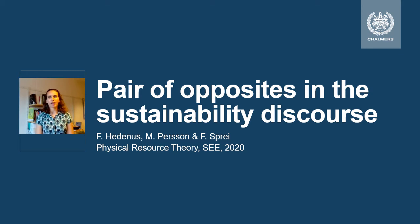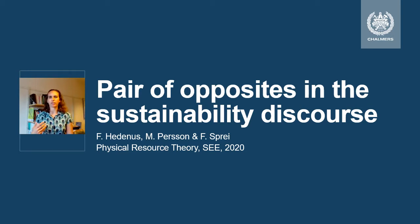Hi, my name is Frances Spry and in this short video lecture I'm going to present different pairs of opposites that can describe different positions in the sustainability discourse. Today we see that there are a lot of people that agree that sustainability is a good thing and that talk about sustainability and sustainable development. However, there are different views on what exactly is sustainable and how we achieve sustainable development. In this lecture, we're going to look at different pairs of opposites that could explain these differences.